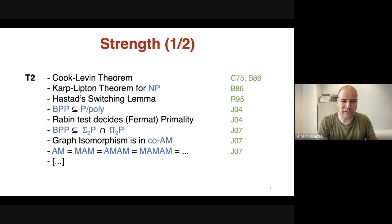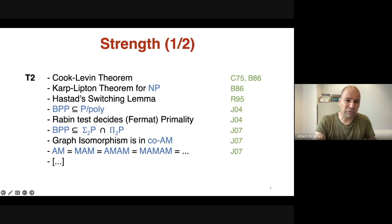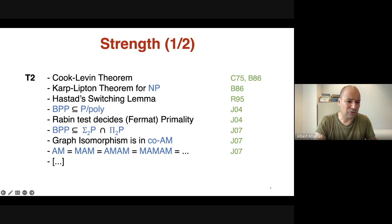Let's discuss how powerful these theories are. The theory T₂ is known to be powerful enough to formalize many concepts of complexity theory: for example, the Cook-Levin theorem (satisfiability is NP-complete), the Karp-Lipton theorem (if NP has polynomial size circuits then the polynomial-time hierarchy collapses to the second level), and Håstad's switching lemma — a key lemma for proving circuit lower bounds. Rabin's primality test can also be formalized, as shown by Jeřábek in 2004.